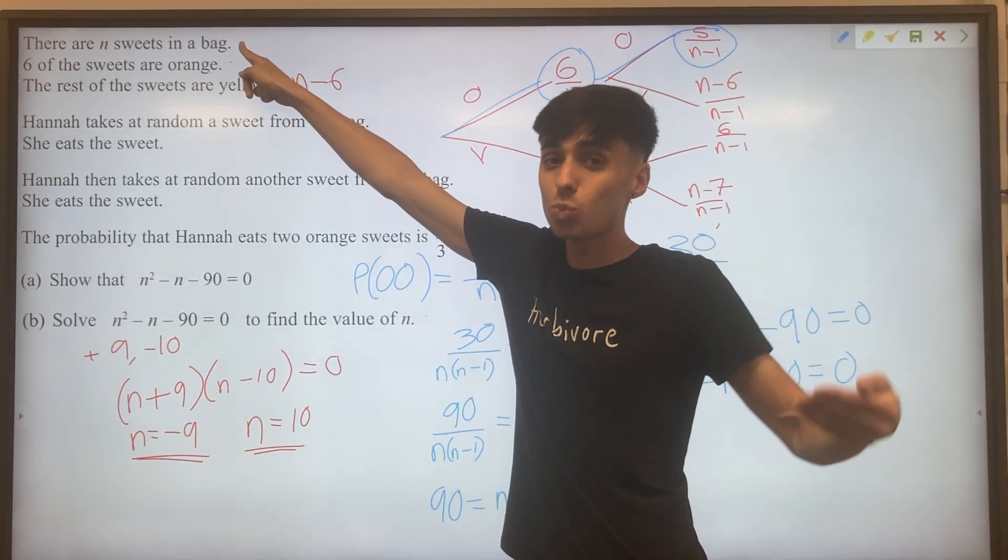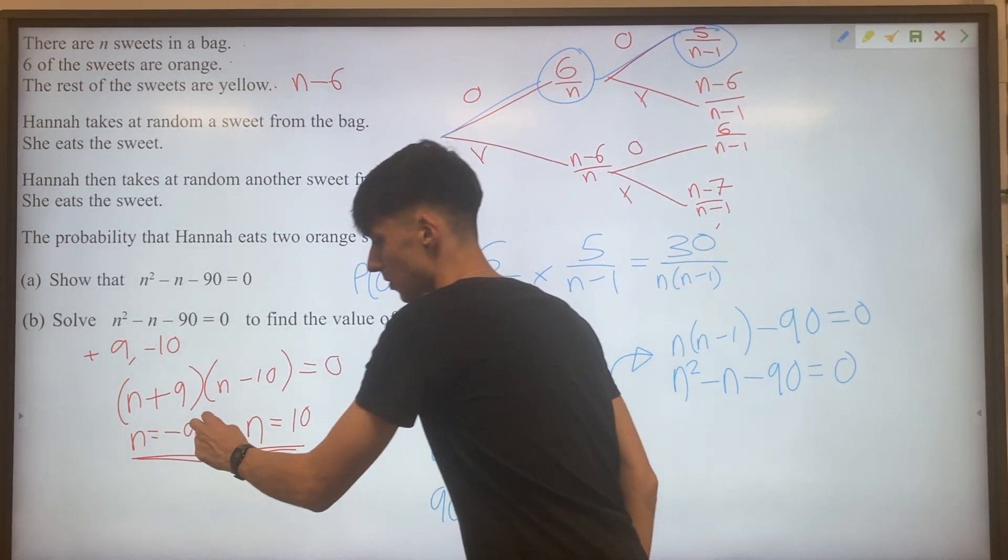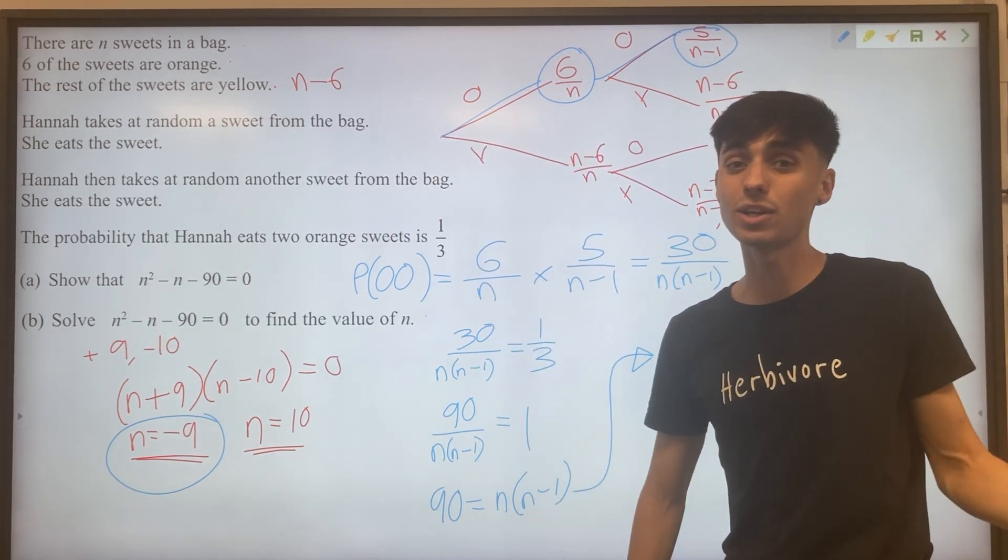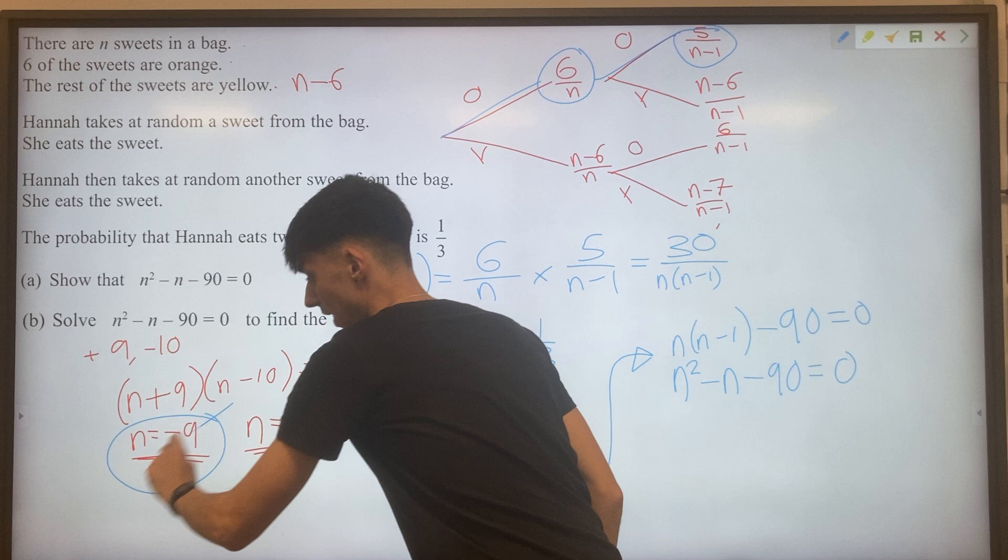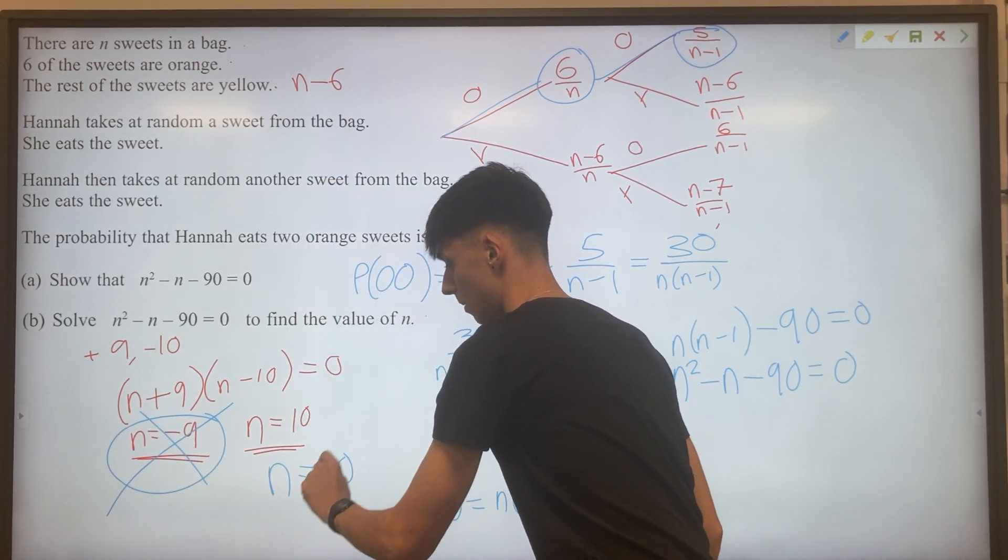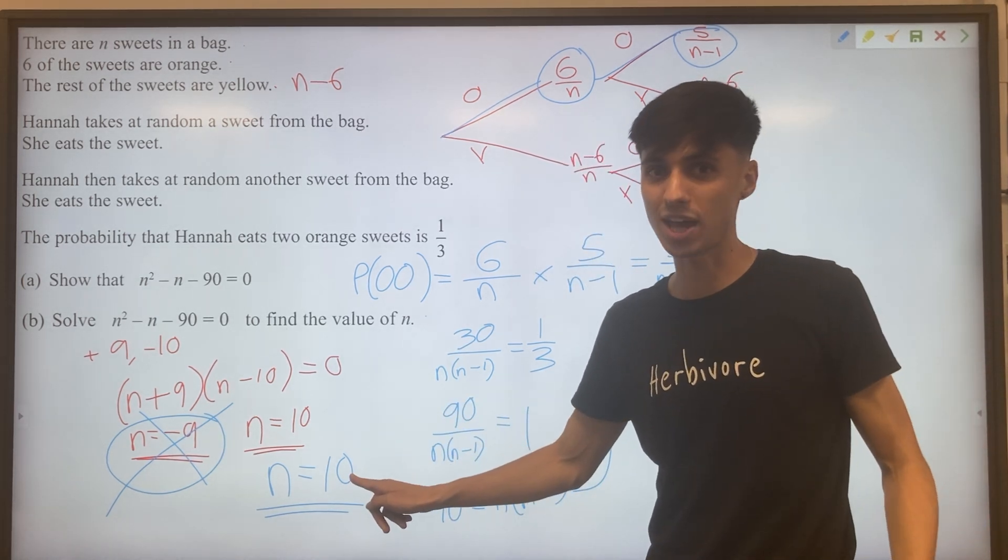N was the number of sweets in a bag. So quite clearly, once you've remembered that, N equals minus nine is not possible. You cannot have minus nine sweets in a bag. So we can actually cross this solution out and only accept our positive solution, positive integer solution, N equals 10.